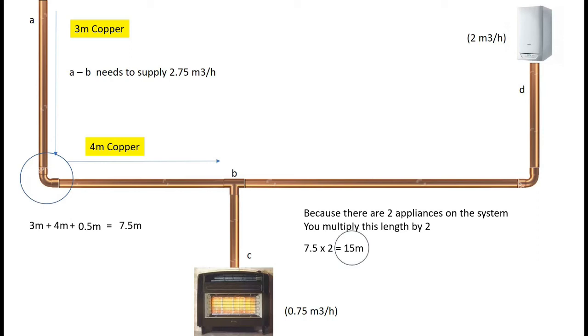Now, you've got the two numbers that you need to do your pipe sizing. You've got 15 meters of pipe, and you've got 2.75 meters cubed per hour to go through it. They're the only two numbers you need to pipe size. You then go to your chart in the Viper book, and it will show you the size of pipe that you need.